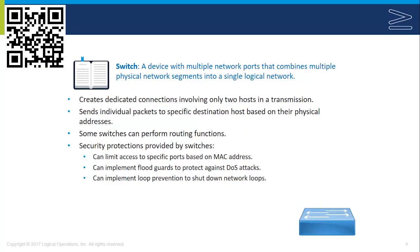The next device is a switch, which is traditionally a layer 2 device. Switches segment the network at layer 2, which means it's based on MAC addresses, whereas layer 3 devices like a router segment based on protocol addresses. The switch's primary job is as a replacement for the hub, which was used to connect individual systems. The switch has multiple ports, individual devices connect to a particular port, and unlike a hub, it does not broadcast packets out all ports. Instead, it creates dedicated connections involving only two hosts in the transmission, sending individual packets to a particular host based on their physical address. Switches learn about MAC addresses connected to each port and then do direct MAC-address-to-MAC-address communication.